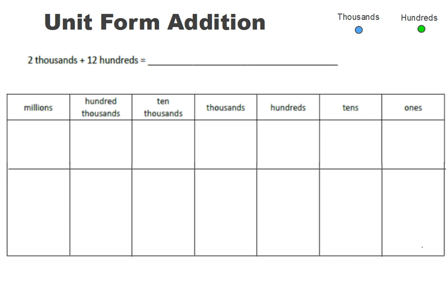I'm going to use this place value chart to help do that. Over here I have some blue chips — each chip represents one thousand. So that's one thousand, but it says I need two thousand, so I'm going to get another one. Now I have two thousands.